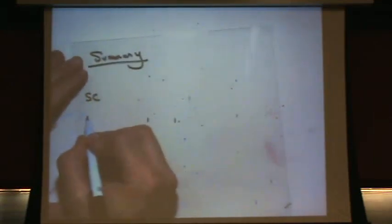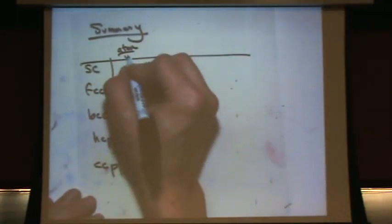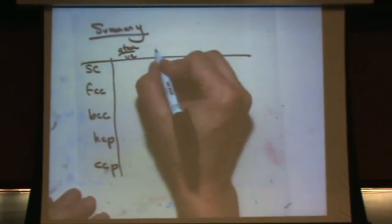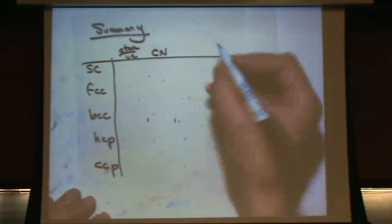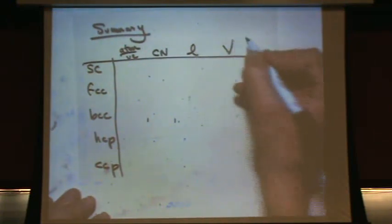This is for crystal structures. I'm going to make a table. This table will have atoms per unit cell. It will have coordination number. It will have length. And it will have volume.